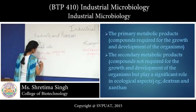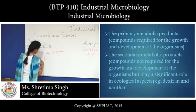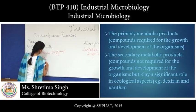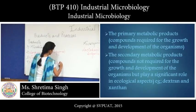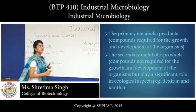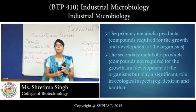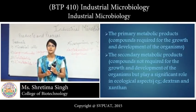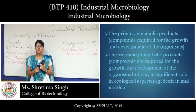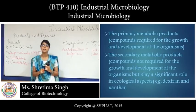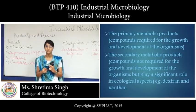Secondary metabolites include dextrans — for example, dextran. Dextran is used as a lubricating agent in eye drops and is also used in increasing blood plasma volume as well as blood glucose levels.